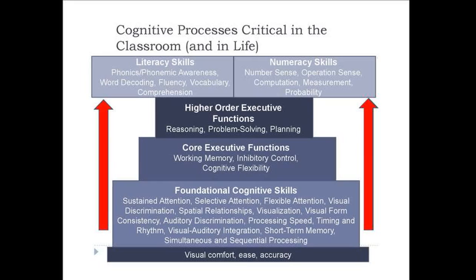On top of that are higher-order executive functions, which include reasoning, problem solving, and planning. That's where a lot of education today is focused, especially in terms of common core standards. But what this model says — which is really important — is that all cognitive skills, all the way up through those higher-order executive functions, are necessary for and support the ability to learn to read and do math. Teachers are generally asked to teach reading and math without knowing whether these underlying skills are in place, and there hasn't been a lot they could do about it. That's where vision therapy and Brainware Safari come into play.